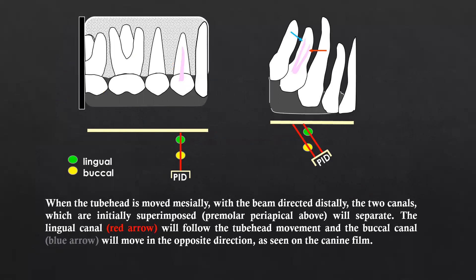This is used to identify the buccal and lingual canals in the case of a premolar. First we take an IOPA radiograph where the two canals are superimposed. Then we take another radiograph by shifting the tube head in one direction and compare the two radiographs. The canal that moves in the same direction as the tube head is the lingual canal, and the one that moves in the opposite direction is the buccal canal.